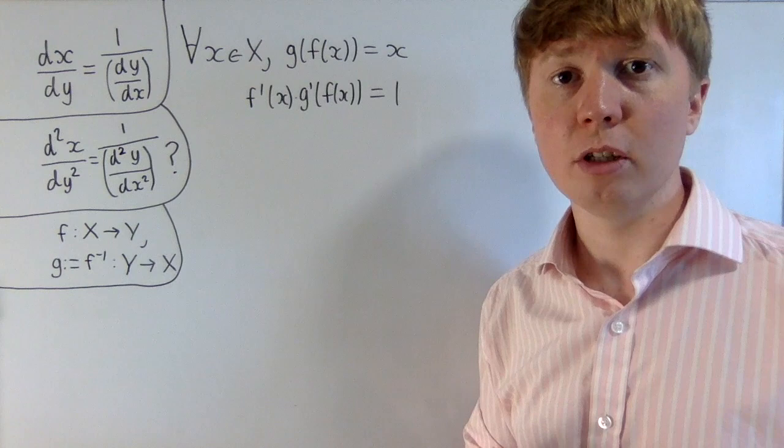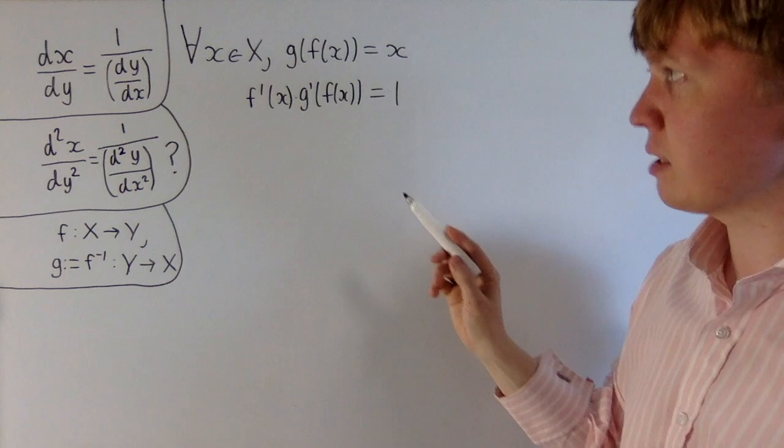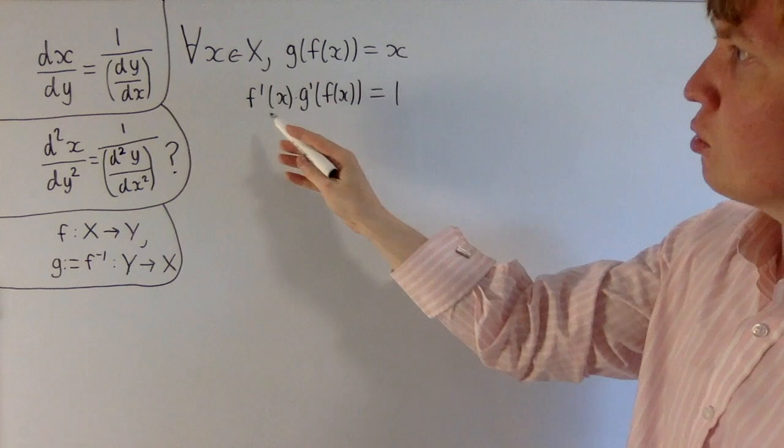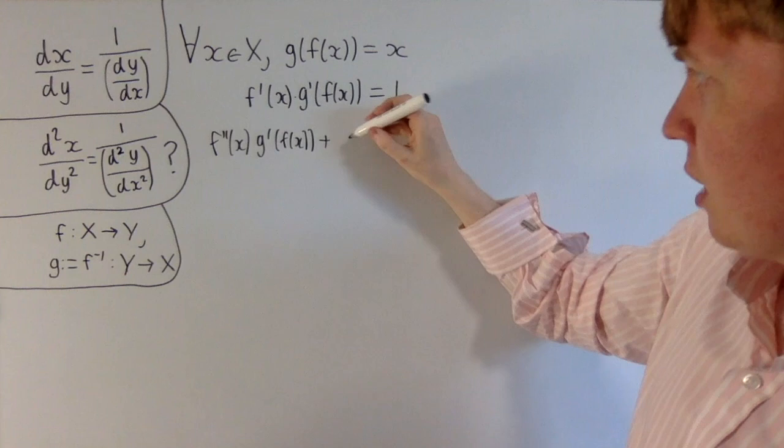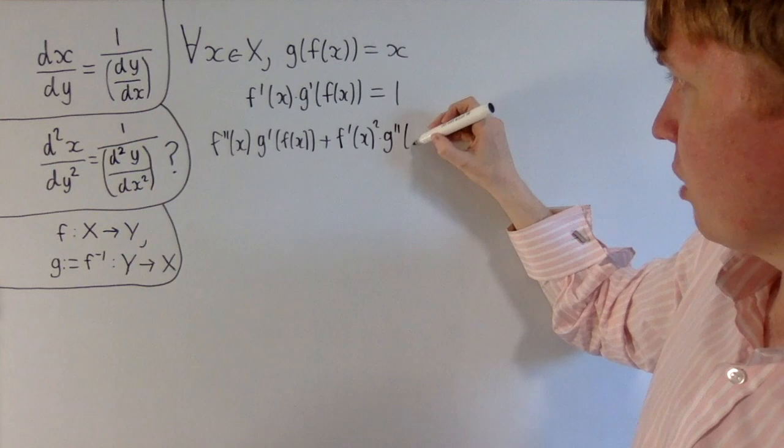If we start with this identity, g(f(x)) = x for all x, differentiate both sides once. To get the second derivatives, we differentiate both sides again. Using the product rule, we get f''(x) multiplied by g'(f(x)) plus, when we differentiate this function, we get another f'(x). So you get [f'(x)]² multiplied by g''(f(x)). This equals 0.